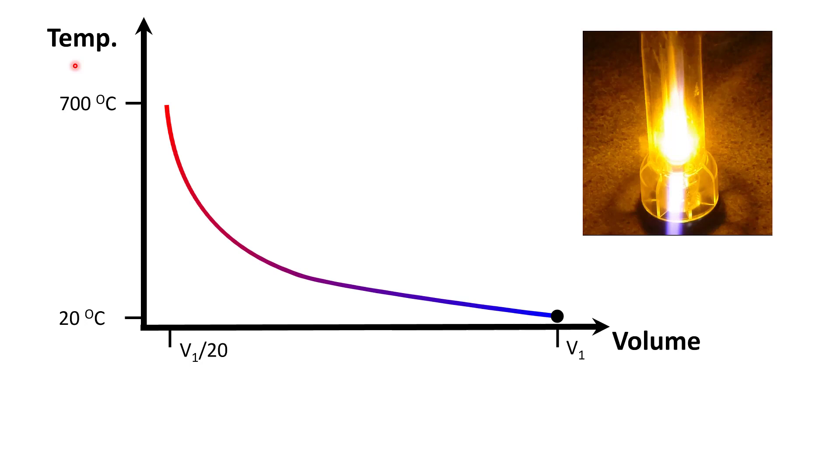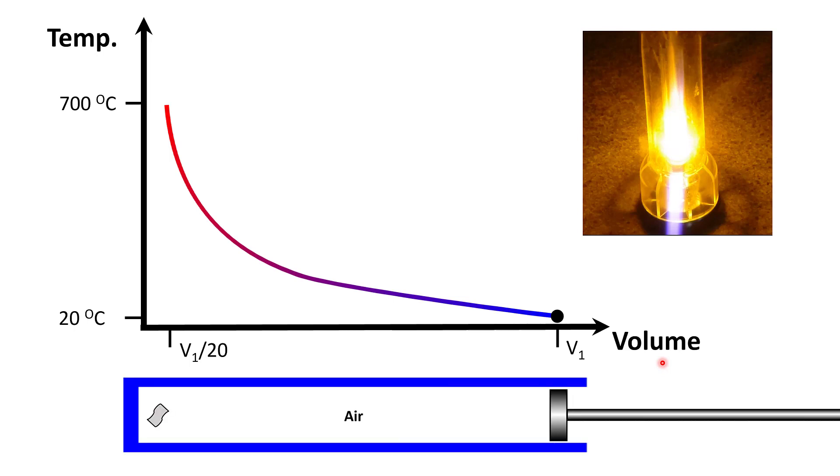So here's a bit more explanation of what's going on. I've done the calculation, which I'll show you in a moment, and I've made a graph of the temperature of the air in the cylinder as a function of the cylinder volume. Here's a sketch of the piston cylinder arrangement. We start off at some initial volume V1 at room temperature, and then the air gets compressed to about 1/20th of its original volume.